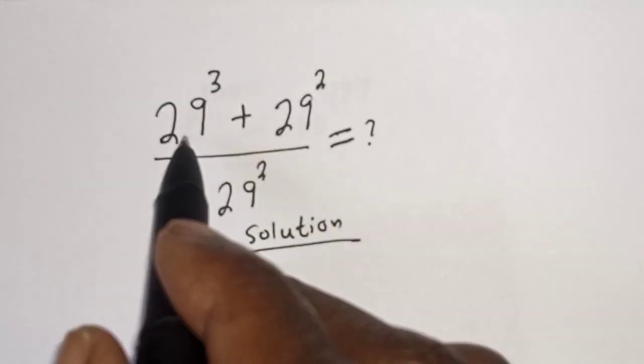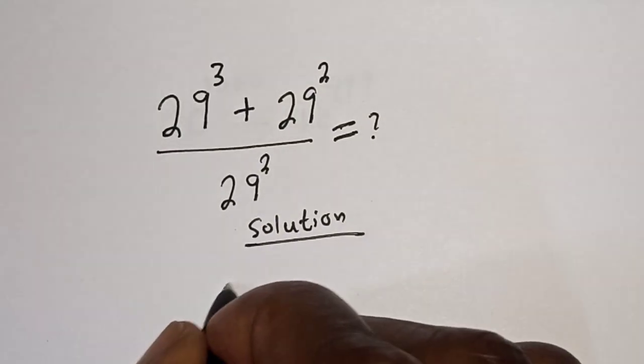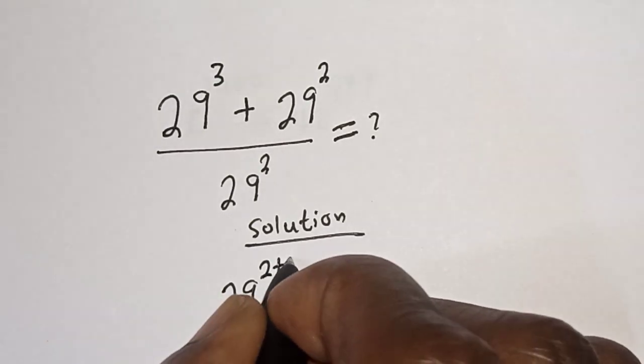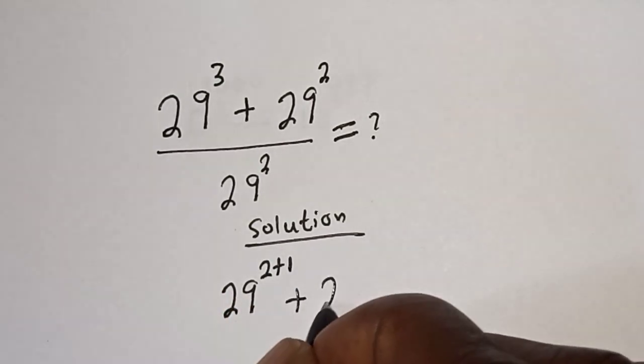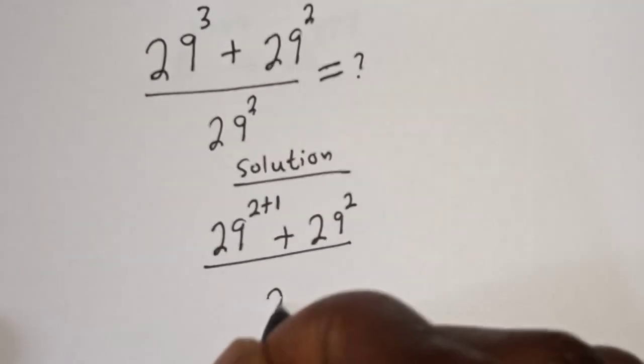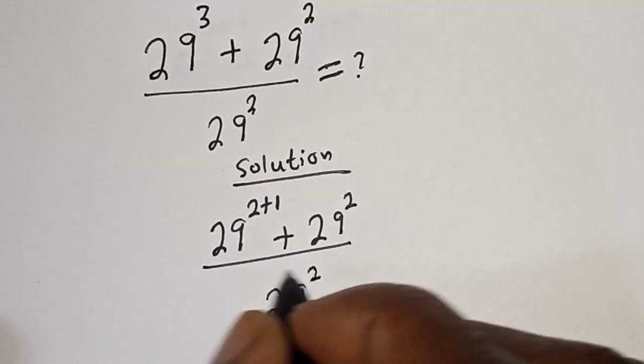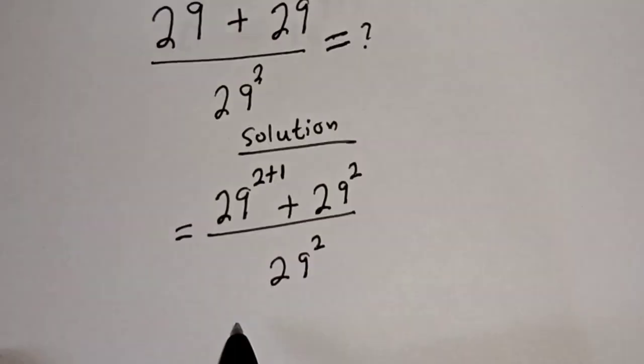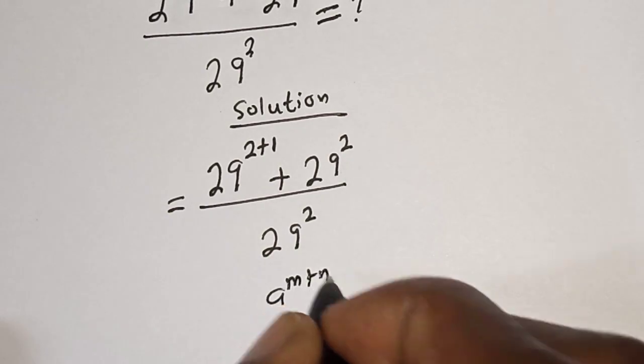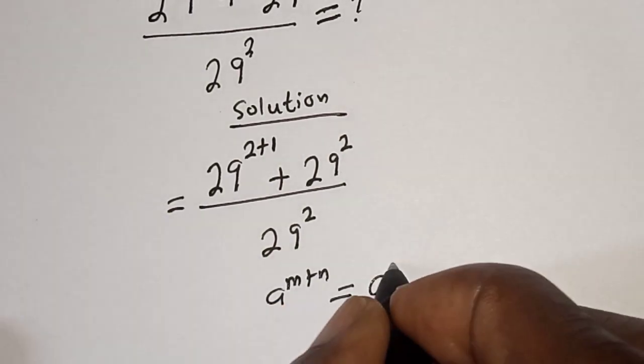29 raised to power 3 can be written as 29 raised to power 2 plus 1, plus 29 squared, over 29 squared. Then take note of this rule that a raised to power m plus n is equal to a raised to power n multiplied by a raised to power m.